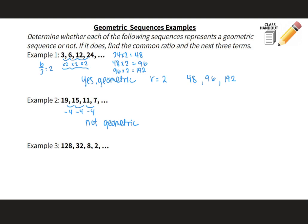Looking at example 3: 128, 32, 8, 2. Since it's decreasing, my common ratio is probably going to be a fraction less than 1. To figure out the common ratio, we take the second term divided by the first: 32 divided by 128 equals 0.25, or written as a fraction, 1/4. We can think of this as dividing by 4. 128 ÷ 4 = 32, 32 ÷ 4 = 8, 8 ÷ 4 = 2. The pattern is divide by 4, which means the common ratio is 1/4.